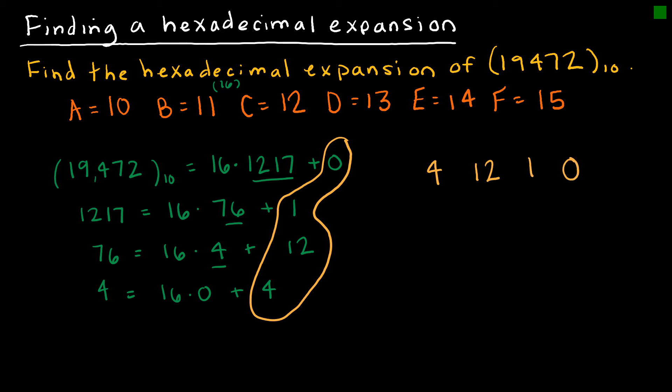Obviously I'm not going to leave it like that because 12 is represented by C. So writing this, I would write 4, C, 1, 0, base 16.